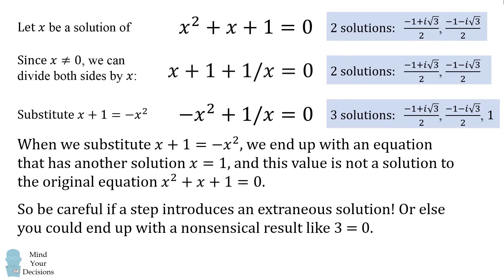So you have to be careful if a step introduces an extraneous solution, or else you could end up with a nonsensical result like 3 = 0. Did you identify where the mistake originated?